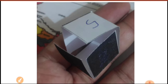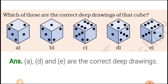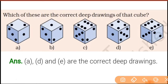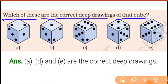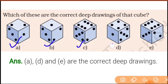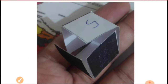Now the question is: which of these are the correct deep drawings of that cube? You have options A, B, C, D. You have the cube and its deep drawings — but what is the difference between them?